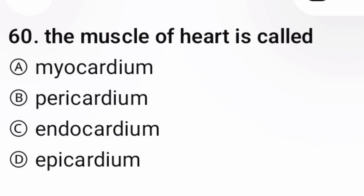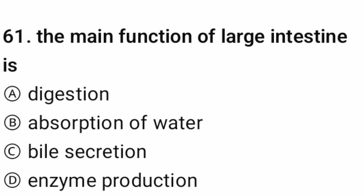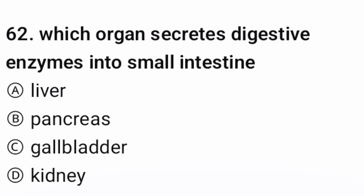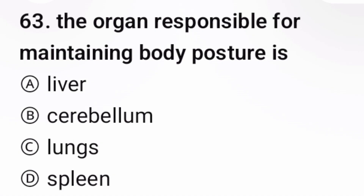Question 60: The muscle of the heart is called — the correct option is A. Question 61: The main function of the large intestine is — correct option is B. Question 62: Which organ secretes digestive enzymes into the small intestine? Question 63: The organ responsible for maintaining body posture.